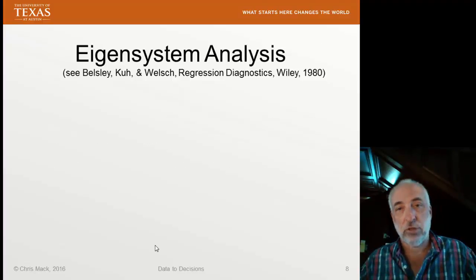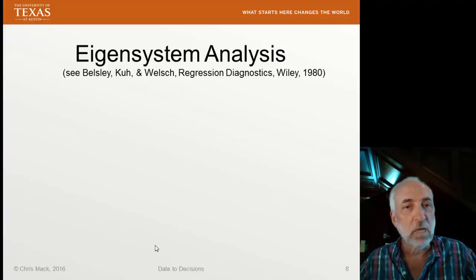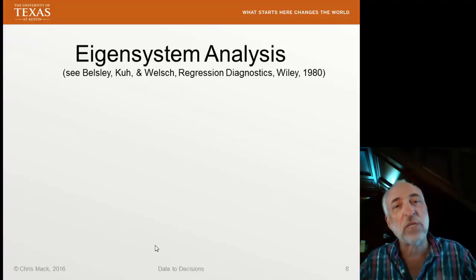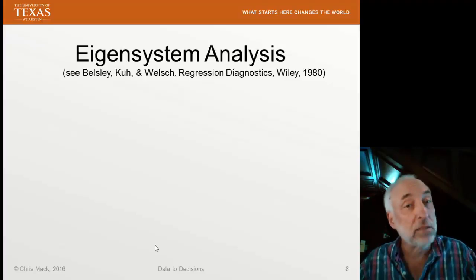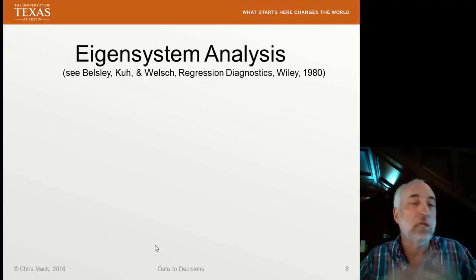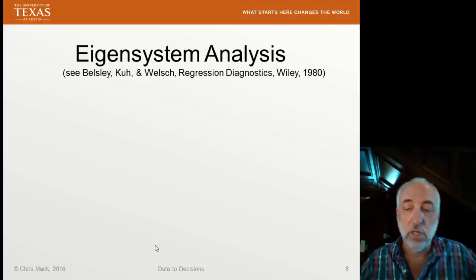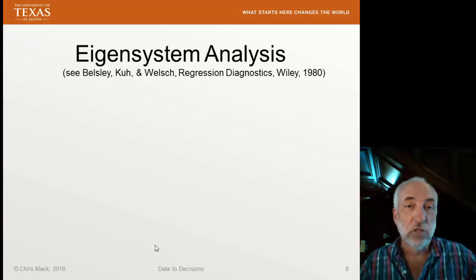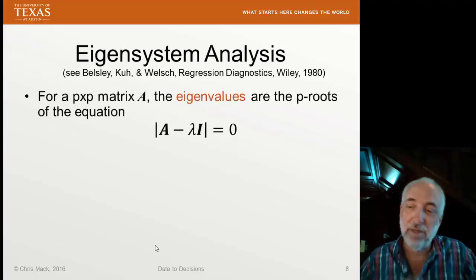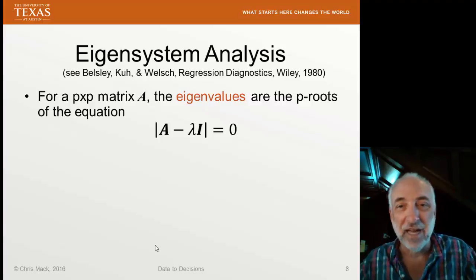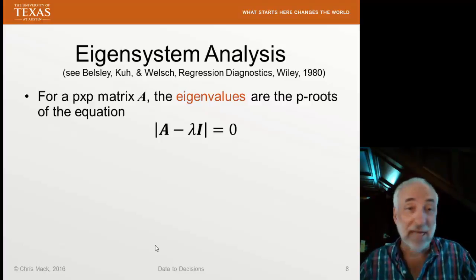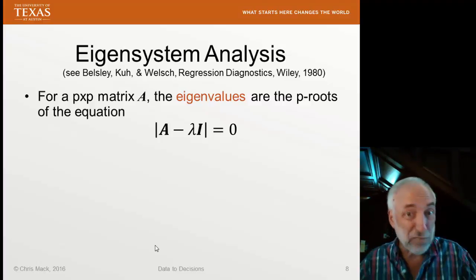The other approach for addressing multicollinearity will involve eigensystem analysis. We're going to start by using eigensystem analysis to detect multicollinearity, then move on to using it to address multicollinearity in a future lecture called PCA — Principal Component Analysis. So what is this eigensystem analysis? Maybe you have taken classes where you've calculated eigenvalues before. If not, I'm not going to dive into the mathematics other than to explain what it is very basically.